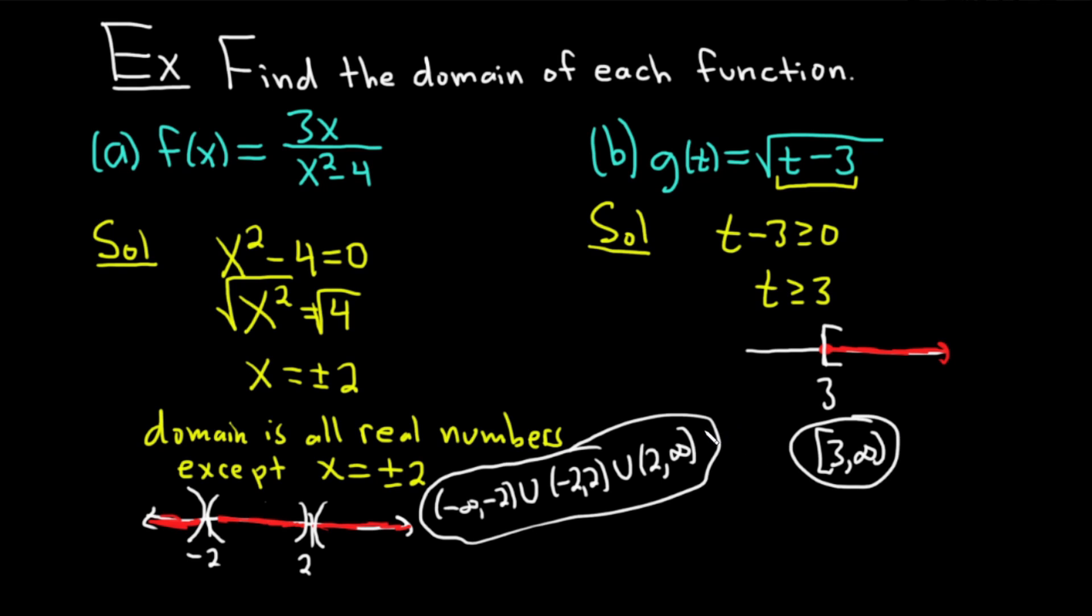These are the two classic examples of finding domain where there's issues. The first one is a fraction. Just find out where it's equal to 0 on the bottom, and then just throw away those numbers. The second one was a square root function. Just take whatever's inside the square root and set it greater than or equal to 0. Hopefully you've learned some math in this video. If you enjoyed this video, make sure to check out more videos on Chegg. Until next time, good luck.